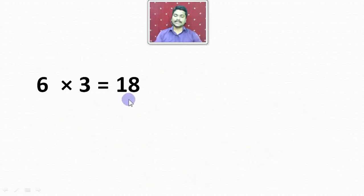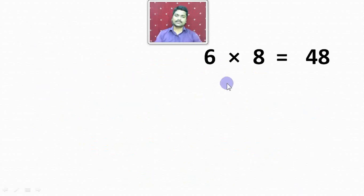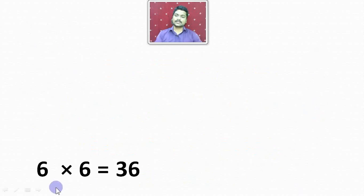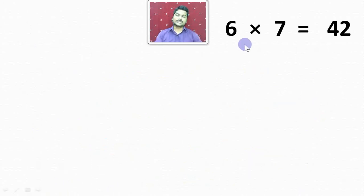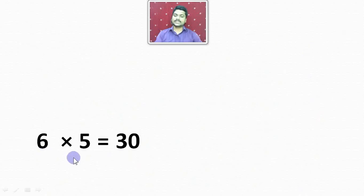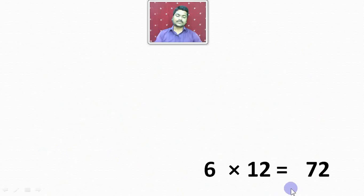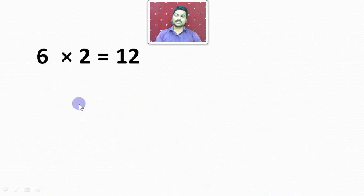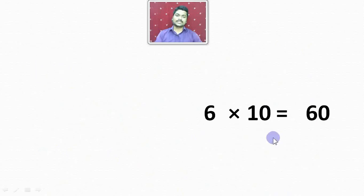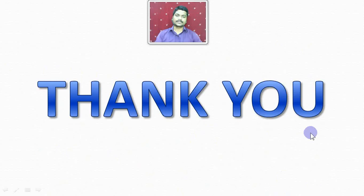6 8s are 48. 6 6s are 36. 6 7s are 42. 6 5s are 30. 6 12s are 72. 6 2s are 12. 6 10s are 60.